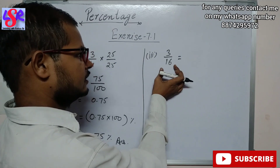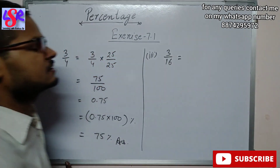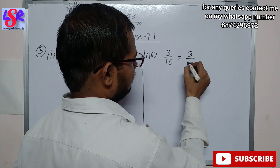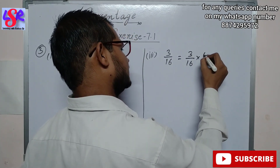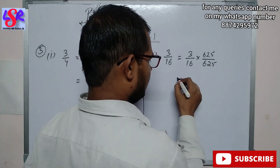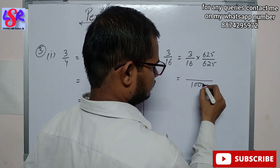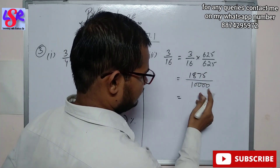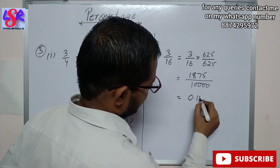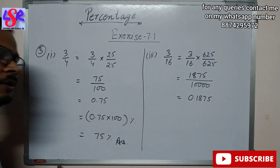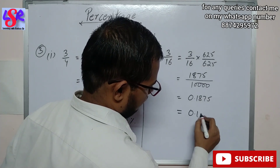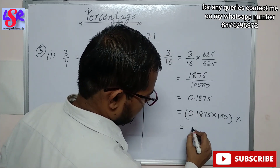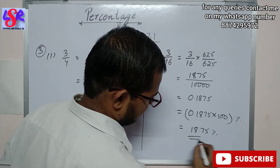Let's see one more part. Here we have 3 upon 16. We can write 16 as 2 to the power 4, so we multiply 5 to the power 4 in both numerator and denominator: 3 upon 16 into 5 to the power 4, which is 625 upon 10,000. In the numerator, 3 into 625 equals 1875, giving 0.1875 as a decimal. Converting to percentage by multiplying by 100 gives 18.75% as the answer.